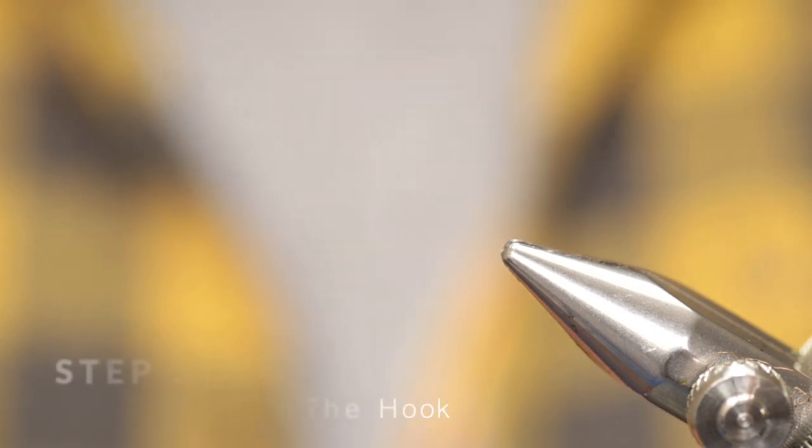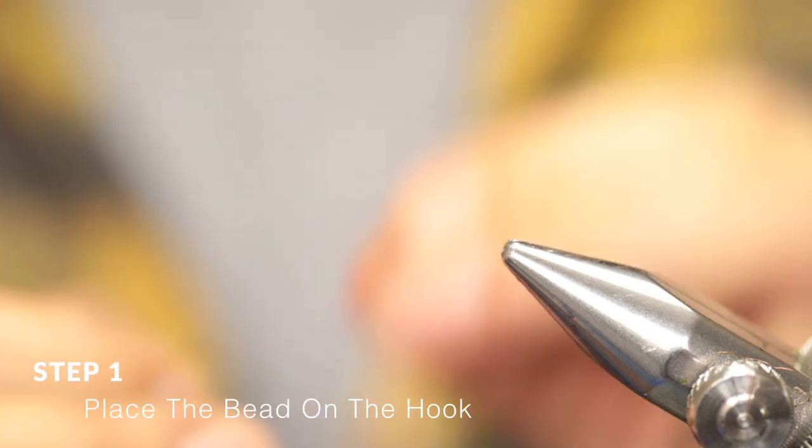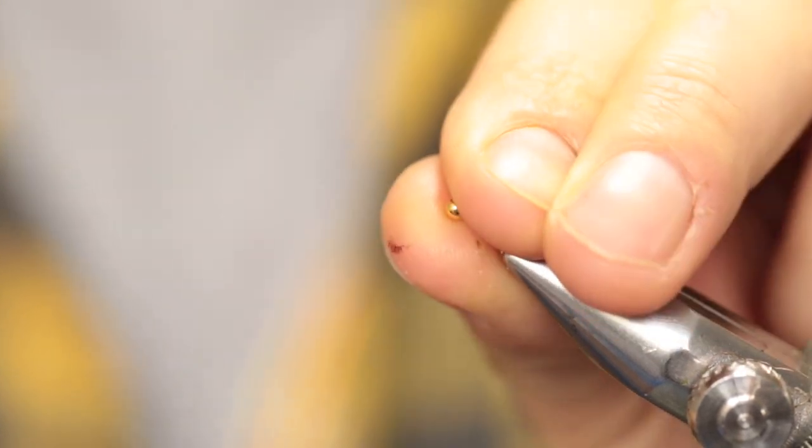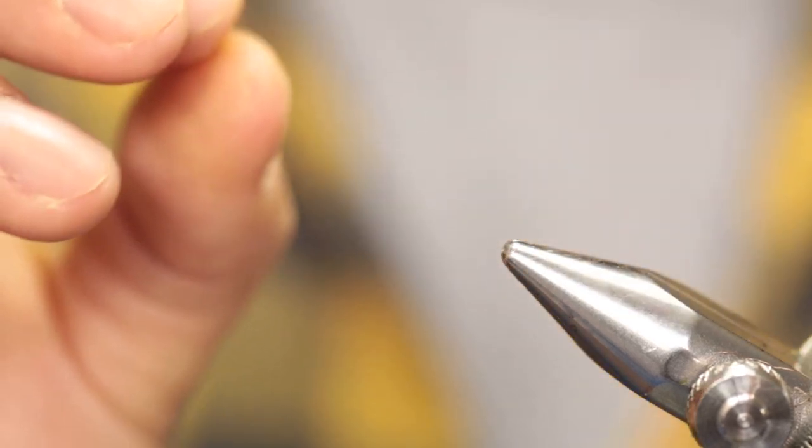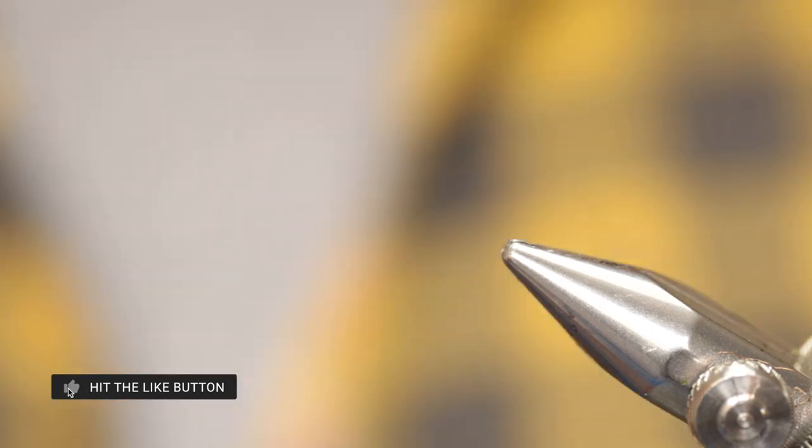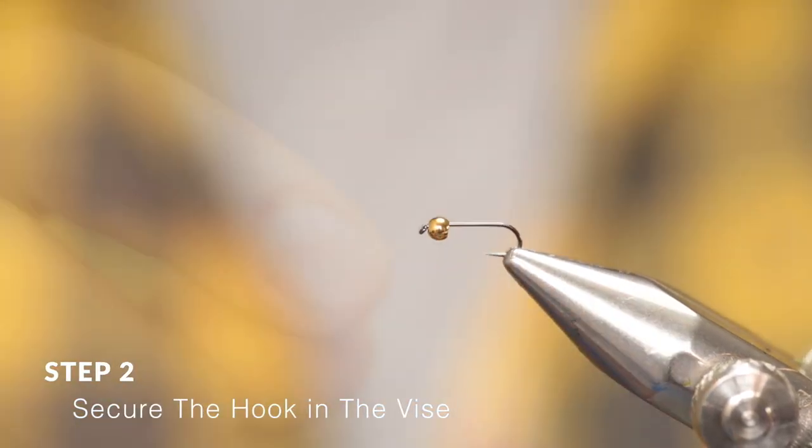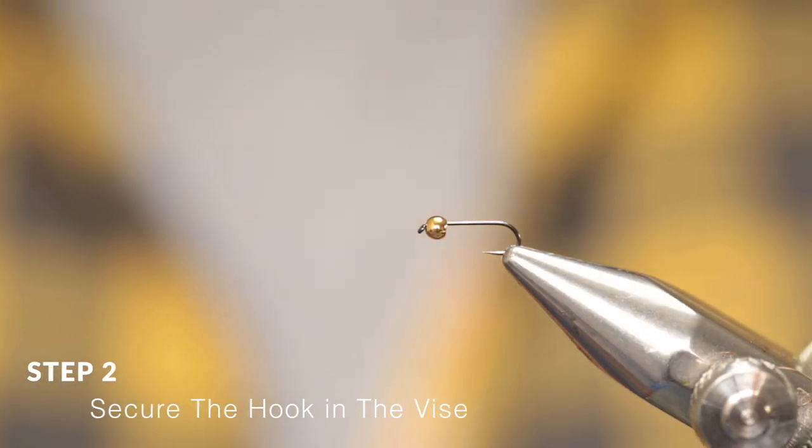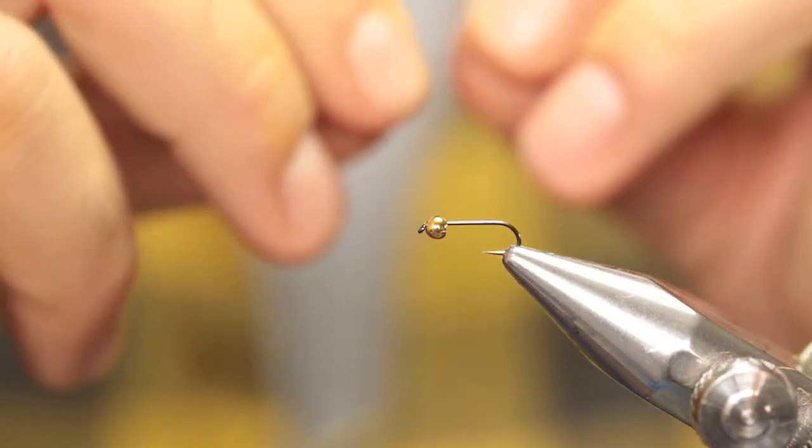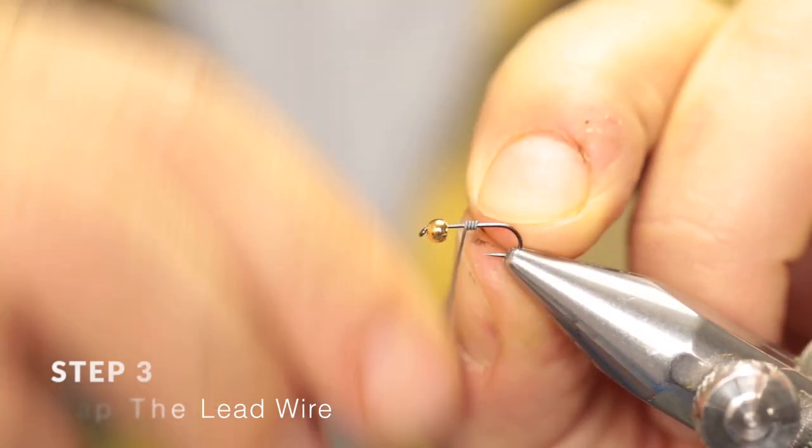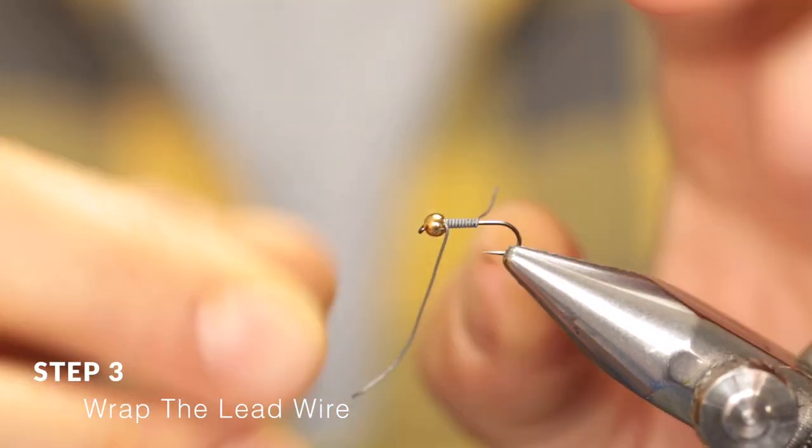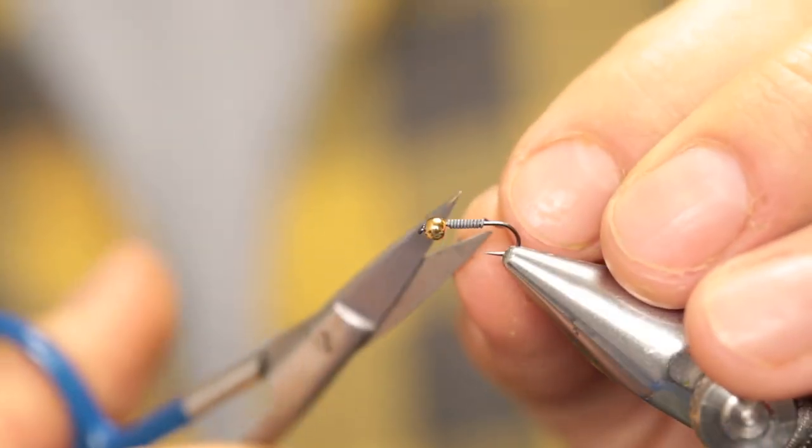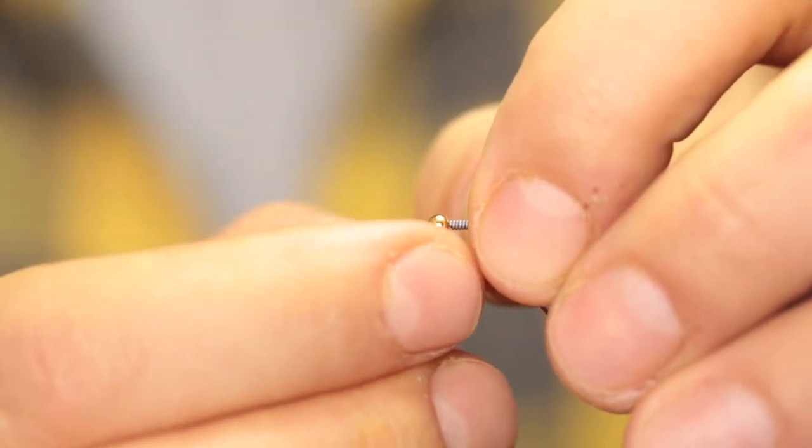The first step in tying the copper john is to place the bead onto the hook. The bead has a smaller hole and a larger hole. Take the small hole and thread it, small hole first, over the hook's point. Make sure the hook is level. The next step is to break off a section of lead wire. I'm going to make about 10 wraps around the hook shank, cut off the back, and slide it into the bead.